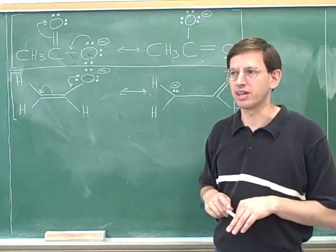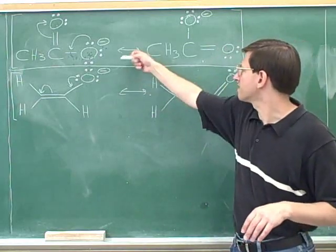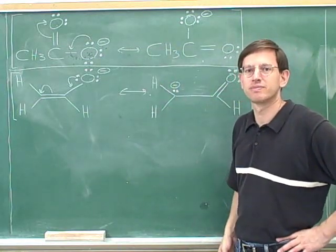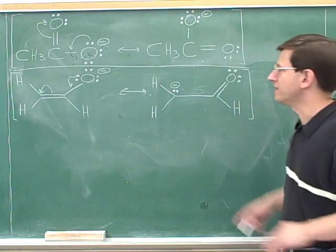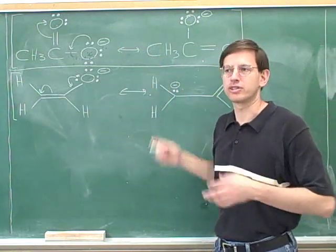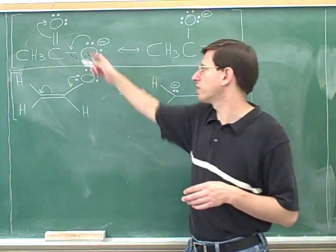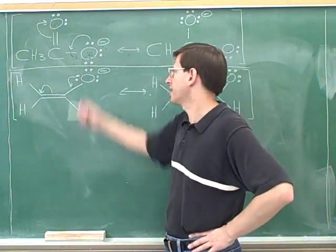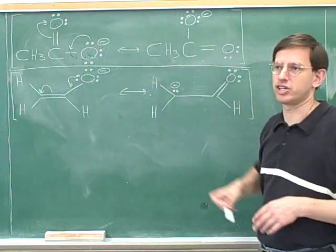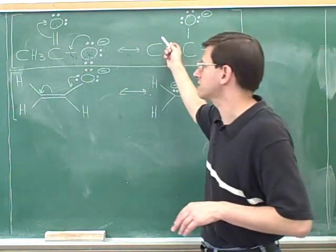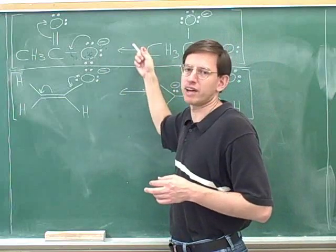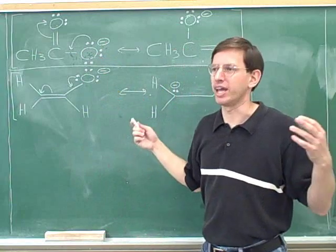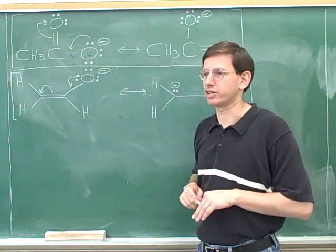How about in our first picture — acetate? Which of these two resonance structures was more significant? Well, in this case these two resonance structures are exactly symmetrical to each other. There's no reason to prefer one over the other, because in this resonance structure an oxygen has a negative charge, and in this resonance structure the other oxygen has a negative charge. So in this case we wouldn't do a weighted average — we would do an equal average, with each of the two structures getting a one-half weight when blending the two structures together.